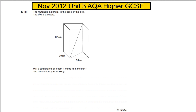Part B says the rectangle used in part A is the base of this box — that rectangle there is the same as the one we've previously worked out. We said previously that diagonal is 46.1 centimetres. Will a rod of length 1 metre fit in the box? You must show your working.